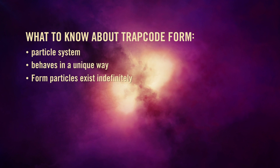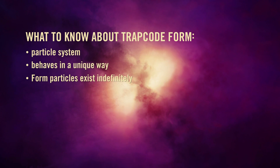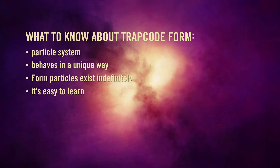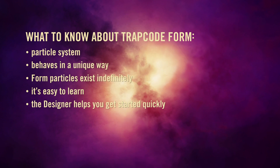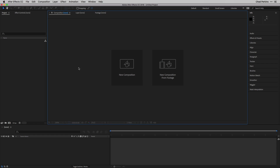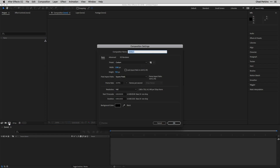Form isn't difficult to learn or even master, as we'll see throughout this series. There's also a way to just jump in without really knowing anything about Form — and that's what we're going to cover in this first tutorial. Let's start with a brand new After Effects project. I'm going to click and create a new composition: 1280 by 720 at 24 frames per second.